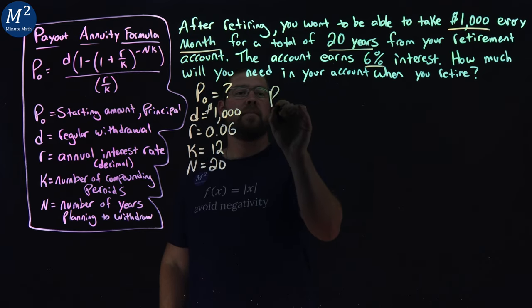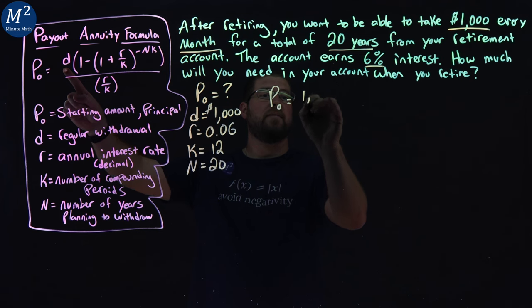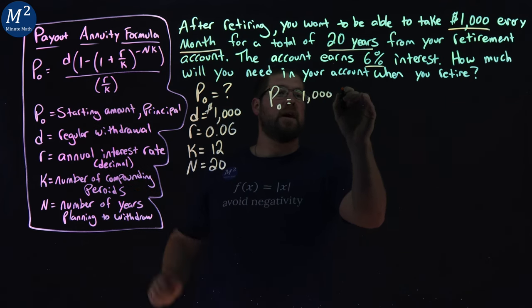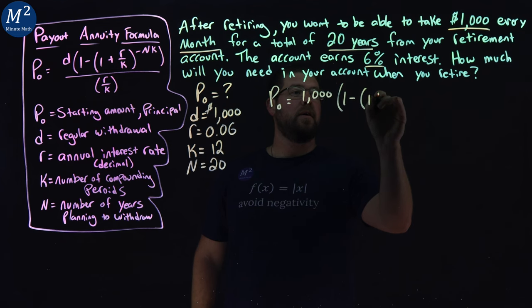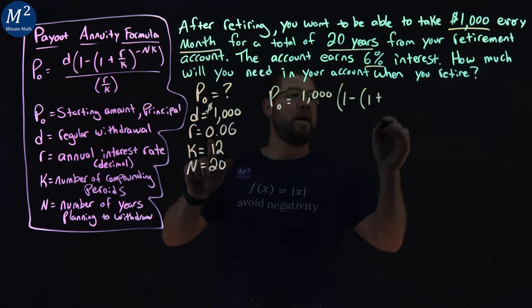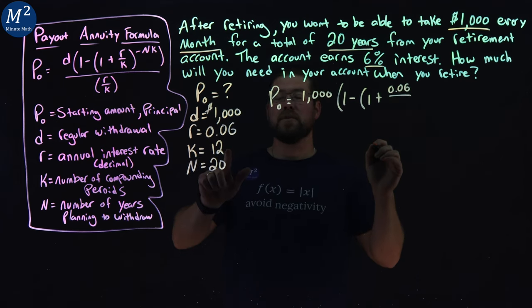So we don't know P sub 0, but we have a formula for D is 1,000 times a 1 minus another parenthesis, 1 plus our R value as a decimal, 0.06 over K, which is 12.